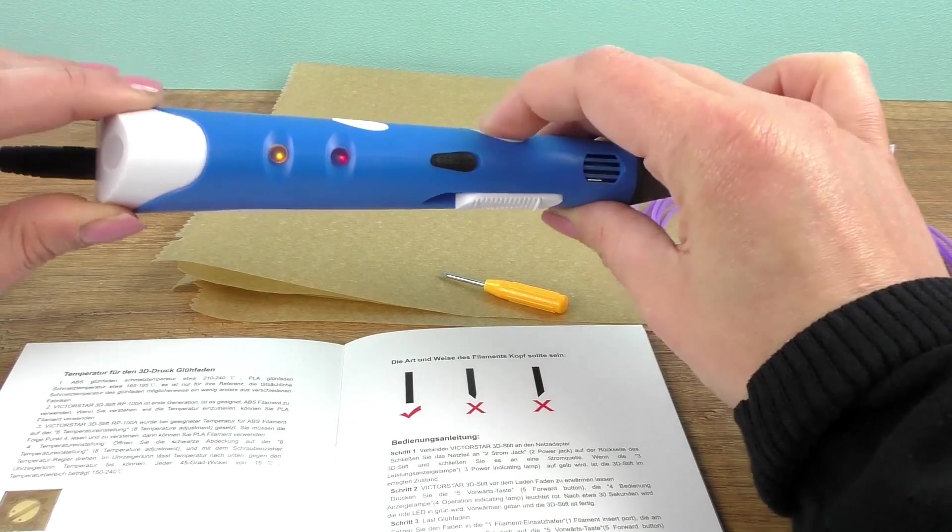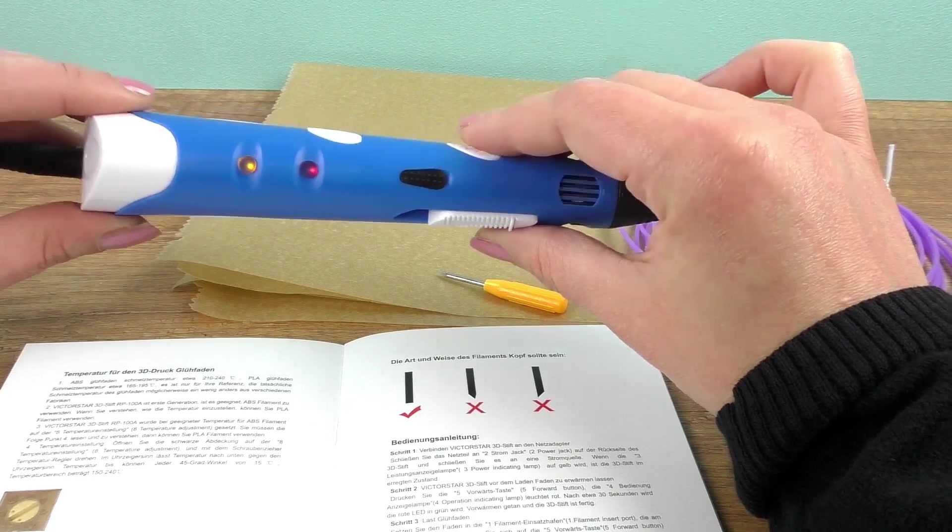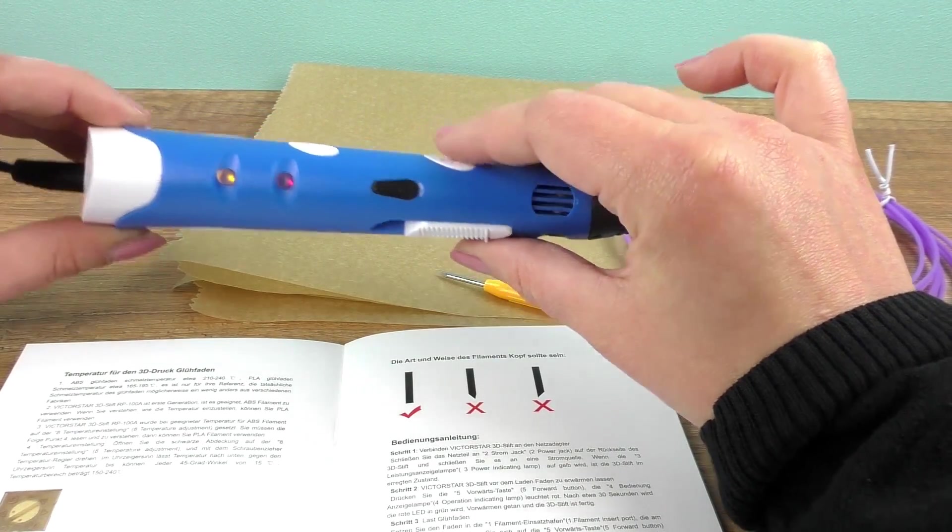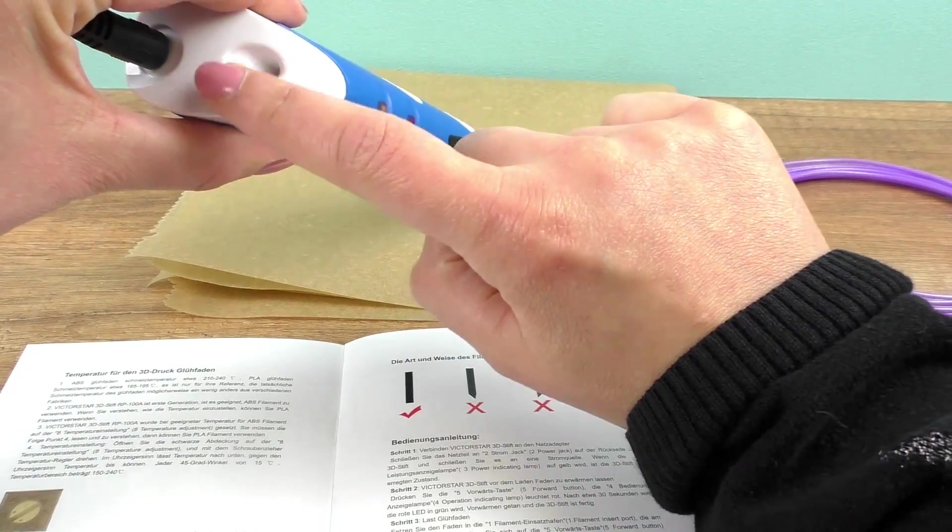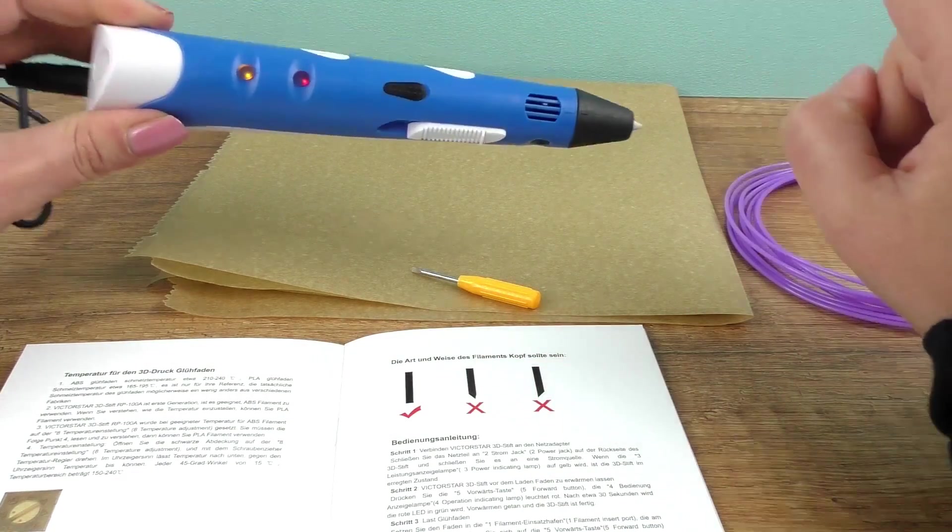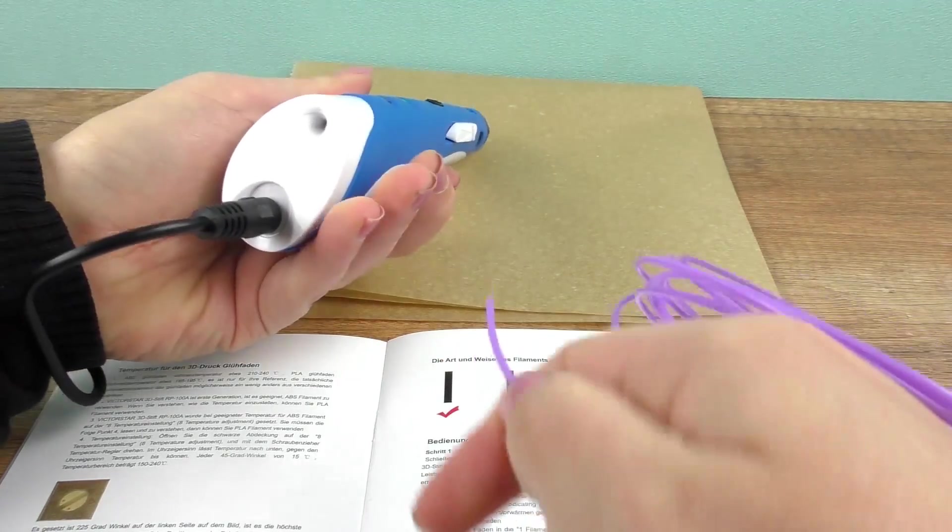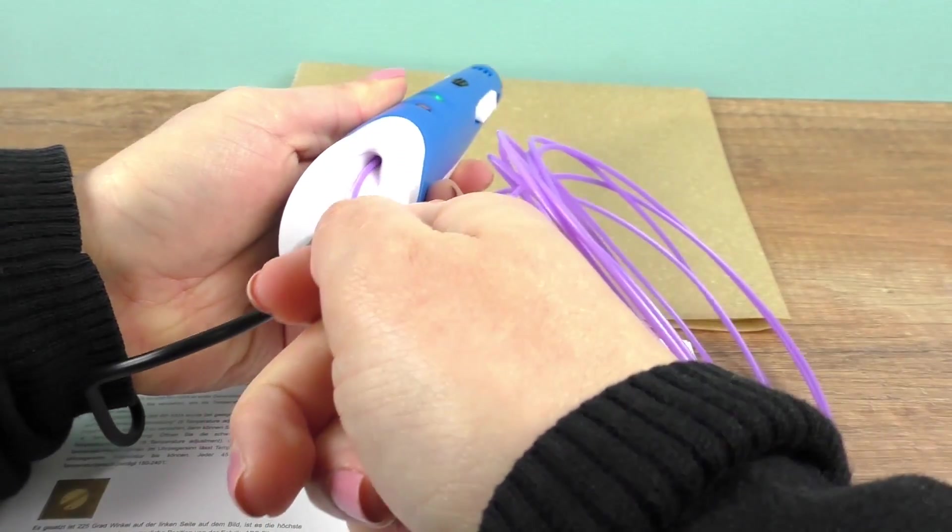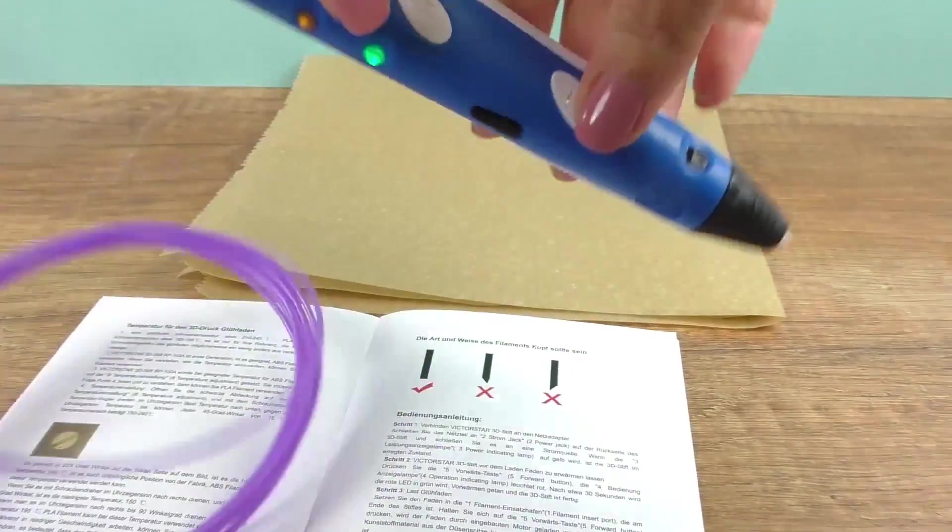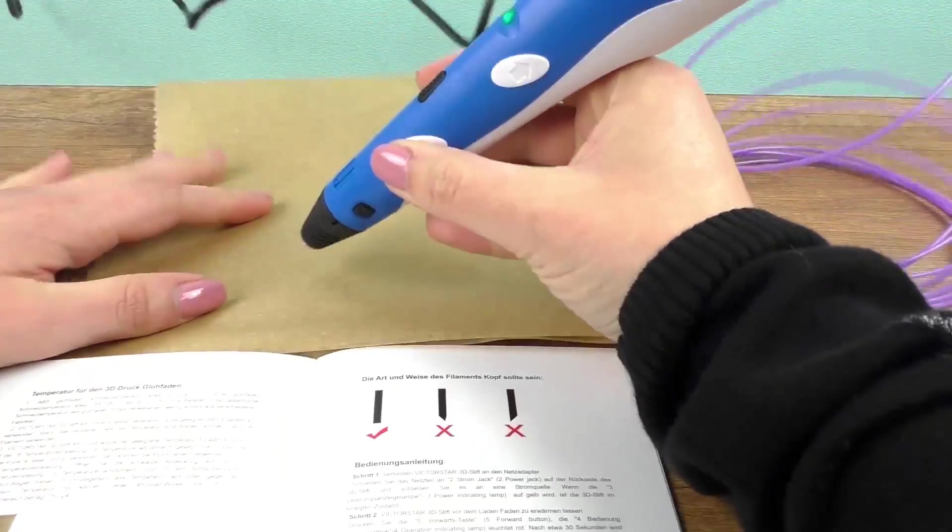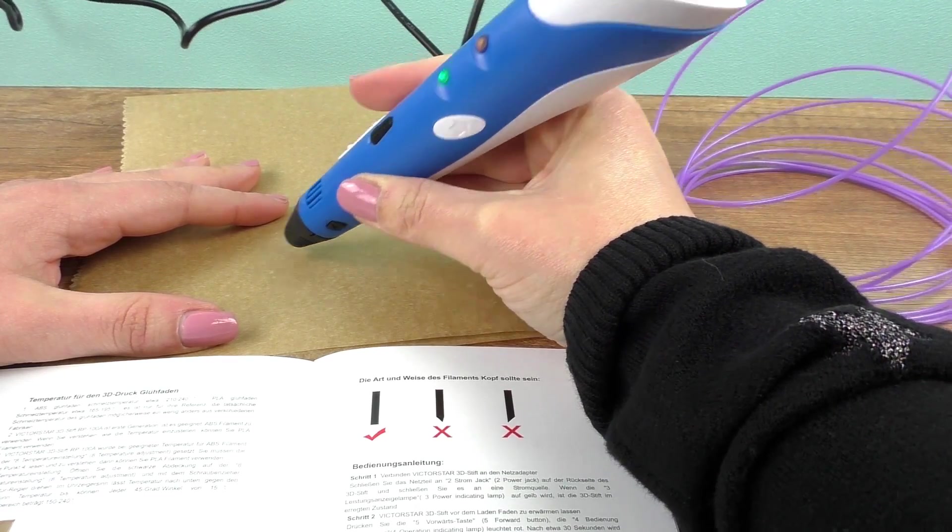So when I press over here, the second light goes off, the red one, and after about 30 seconds, it's supposed to turn green, and then we can start. So from the back to the front, green light, let's go.